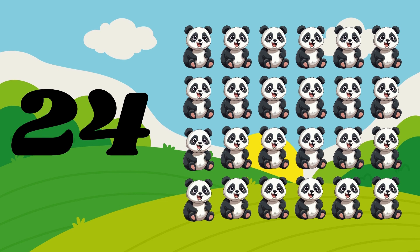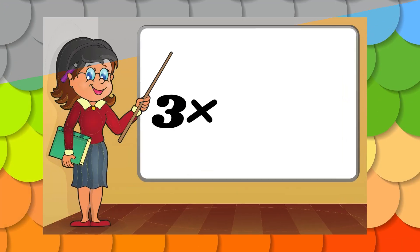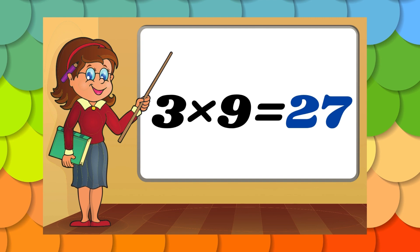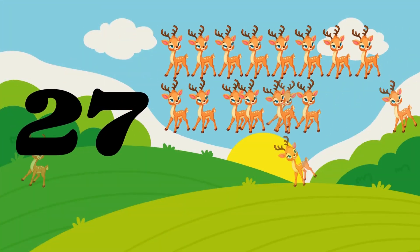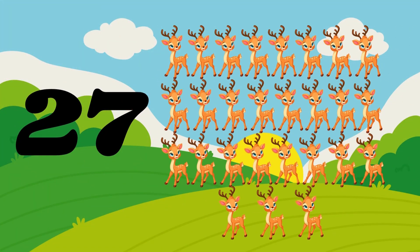Twenty-four pandas. Three nines are twenty-seven. Three nines are twenty-seven. Twenty-seven kangaroos, twenty-seven deers.